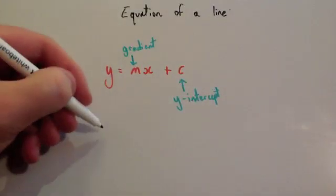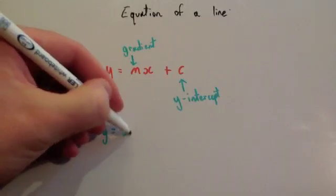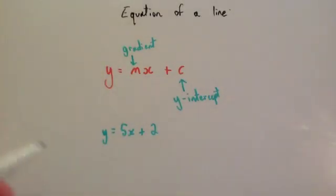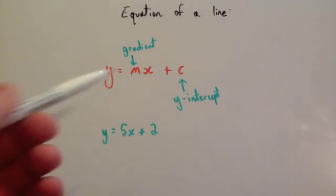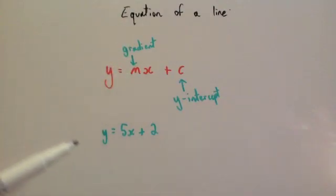So for instance, if you had the line y equals 5x plus 2, that means the gradient of this line would be 5, so that means for every one you go across it goes up 5. Watch the video on gradient if you need more help, and it would cross the y-axis at 2.